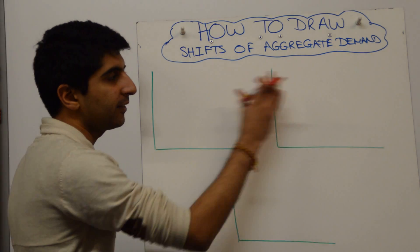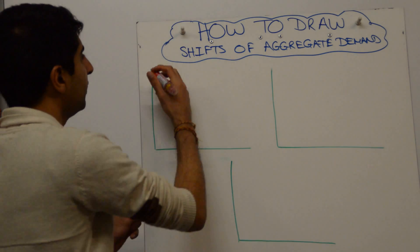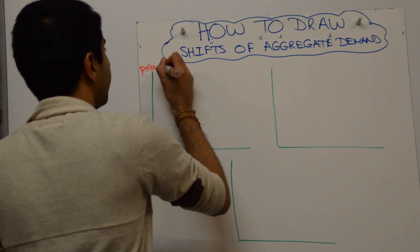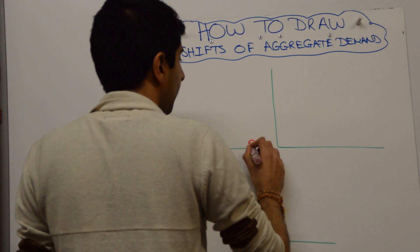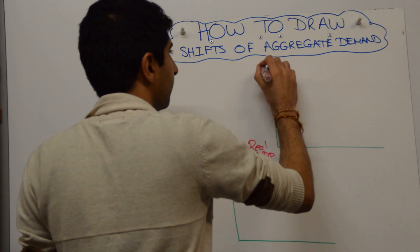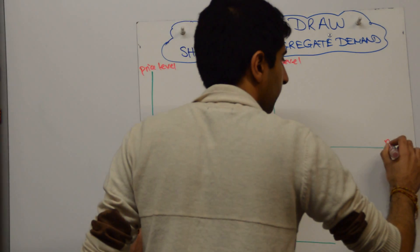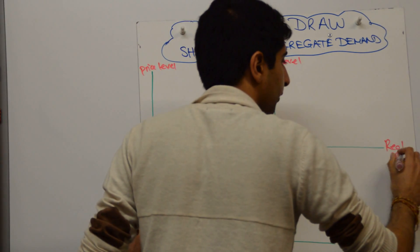Well these two are going to be the classical interpretations. This one down here will be the Keynesian interpretation. Let's start by looking at the classical interpretations. So I'll label these together. Price level on the y-axis, real GDP on the x-axis. So it's important you get that right, otherwise you'll lose all your marks.